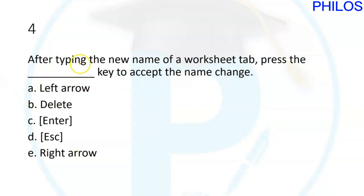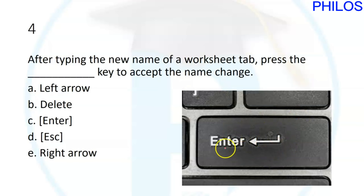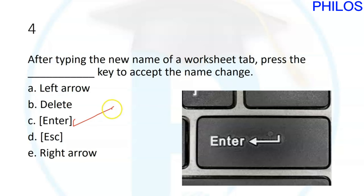Question four says: after typing the new name of a worksheet tab, press the blank key to accept the name change. When you enter the name of a new workbook, you need to press the Enter key for it to accept the name change. Some keyboards draw an arrow instead of writing 'Enter', but it is the same key. The correct answer is C: Enter.